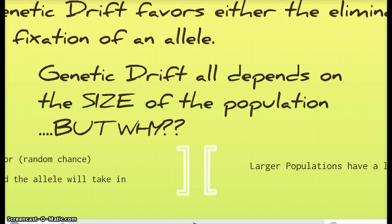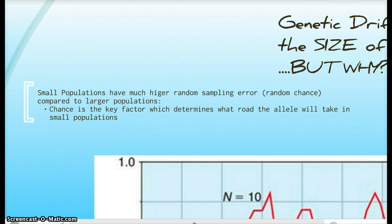As I said, small populations have a higher random sampling error. If you recall from Chapter 16, this was one of the vocabulary words. They have higher random sampling error compared to larger populations. So chance is the key factor which determines whether the allele is completely expressed or not expressed.